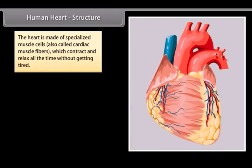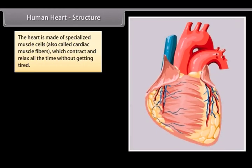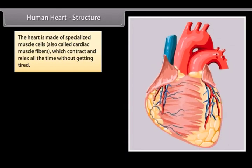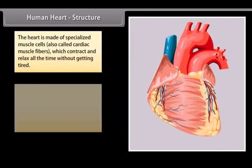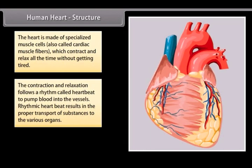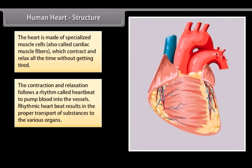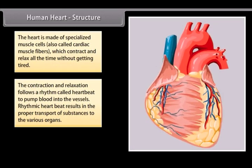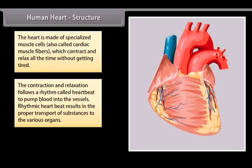The heart is made of specialized muscle cells, also called cardiac muscle fibers, which contract and relax all the time without getting tired. The contraction and relaxation follows a rhythm called heart beat to pump blood into the vessels. Rhythmic heartbeat results in the proper transport of substances to the various organs.